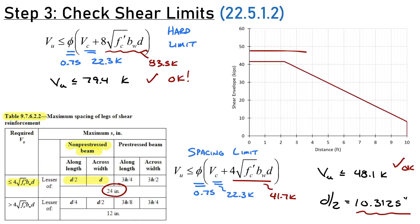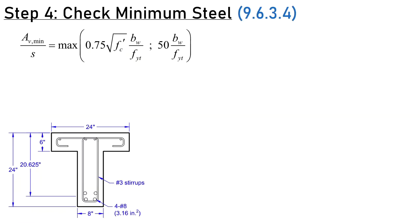Now I want to check one more limit regarding minimum steel. Section 9.6.3.4 gives minimum steel provided as AV_min over spacing S, which is the maximum of two numbers. Calculating those two terms: 0.0063 inches and 0.0067 inches. Make sure FYT is in PSI, as all stresses are in PSI. The maximum value is 0.0067, so AV_min over S equals 0.0067 inches.